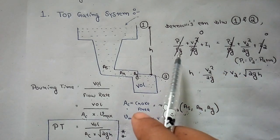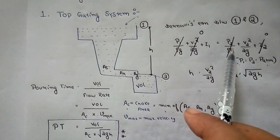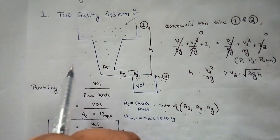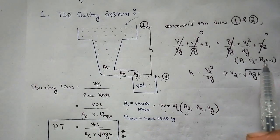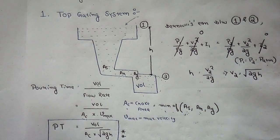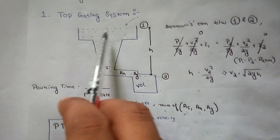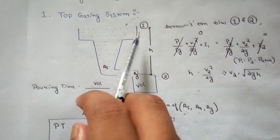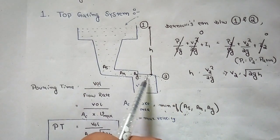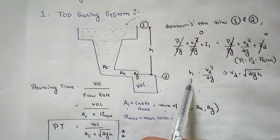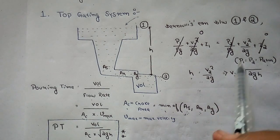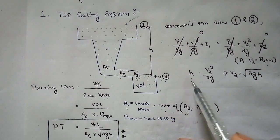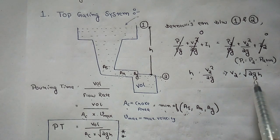Applying Bernoulli's equation between points 1 and 2: P1/ρg + V1²/2g + Z1 = P2/ρg + V2²/2g + Z2. Since P1 and P2 are both at atmospheric pressure, they cancel. V1²/2g equals zero at the initial stage. Taking the datum at the bottom, Z1 equals H and Z2 equals zero. Therefore H = V2²/2g, which gives V2 = √(2gH).